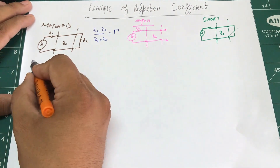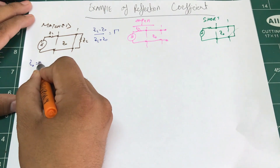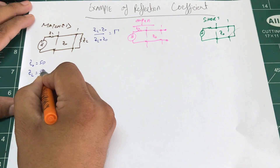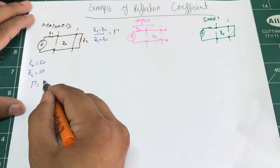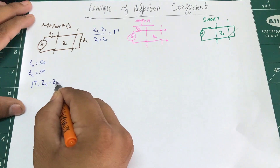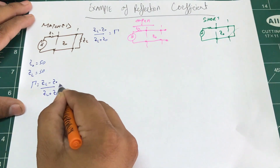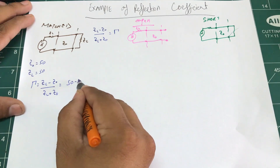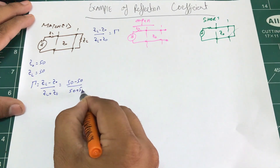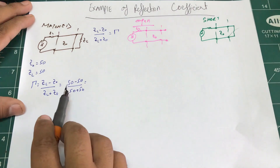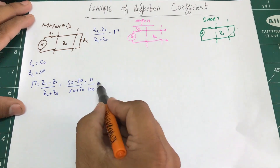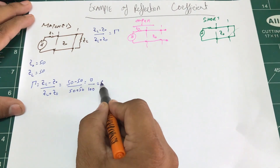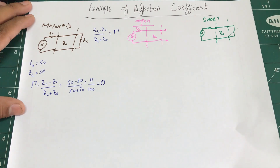If the load is properly matched — say Z0 is 50 ohms and ZL is also 50 ohms — the reflection coefficient is ZL minus Z0 divided by ZL plus Z0, which gives 50 minus 50 over 50 plus 50, equal to 0 over 100, which is zero. So the reflection coefficient for a matched circuit is zero.